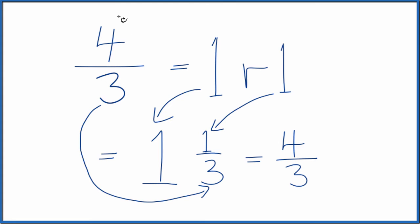This is Dr. B converting four-thirds to an improper fraction, also called a mixed number. The answer, one and one-third. Thanks for watching.